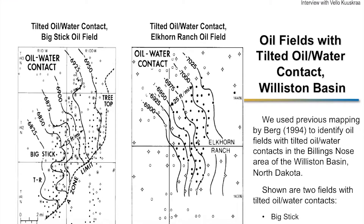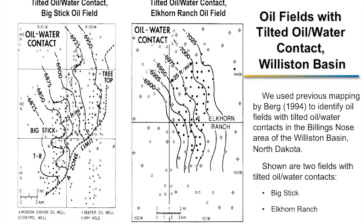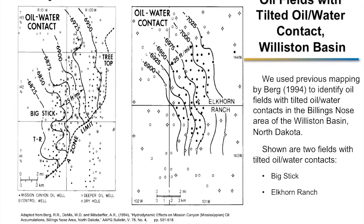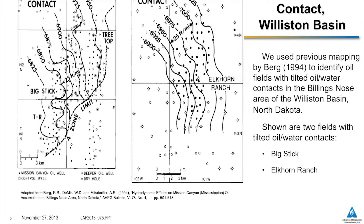I understand you've done some research on the Williston Basin — can you give us some information about that? We wanted to see if similar kinds of residual oil zones might exist in other places, so we went up to the Williston Basin and again looked for oil fields that had tilted oil-water contacts. We came across a number of them — two examples would be the Big Stick Oil Field and the Alcorn Ranch Oil Field, and we found that a number of others existed in this particular area.